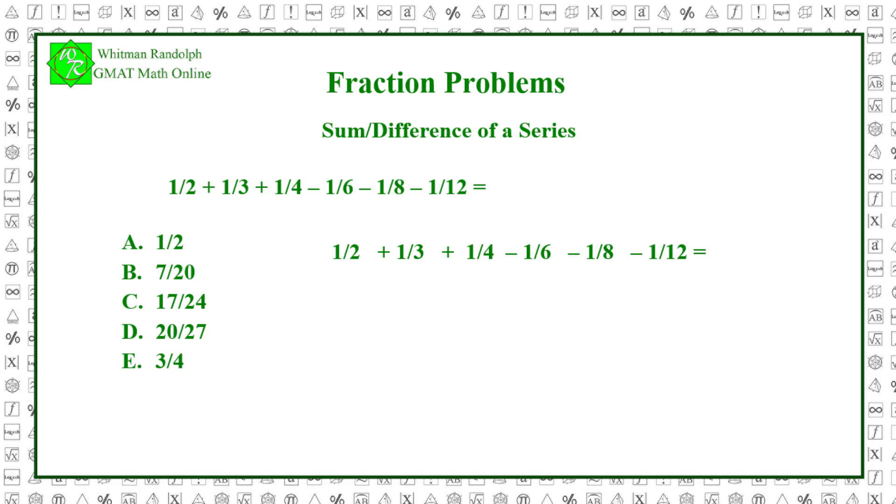Nevertheless, 8 goes into 24 evenly, as do all the others. So 24 is the least common denominator of these fractions. Therefore, if we transform them, we can add and subtract as needed.